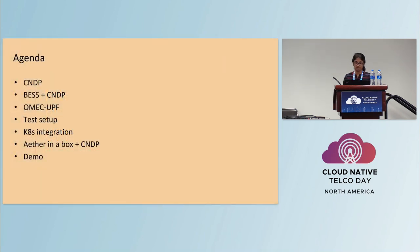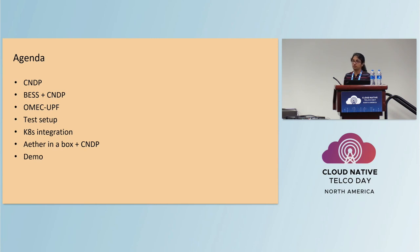The agenda for today's talk is divided into three sections. First, we'll cover CNDP, starting with the motivation for CNDP, going into detail about what CNDP is and the various components that comprise it. We will also talk about the CNDP Kubernetes deployment model and the AFXDP plugins for Kubernetes. In the next section, we will talk about BESS and OMEC-UPF and how CNDP integrates with each of those projects. Then we will move into the Kubernetes integration, the Aether in a box integration, and then wrap up with a short demo.